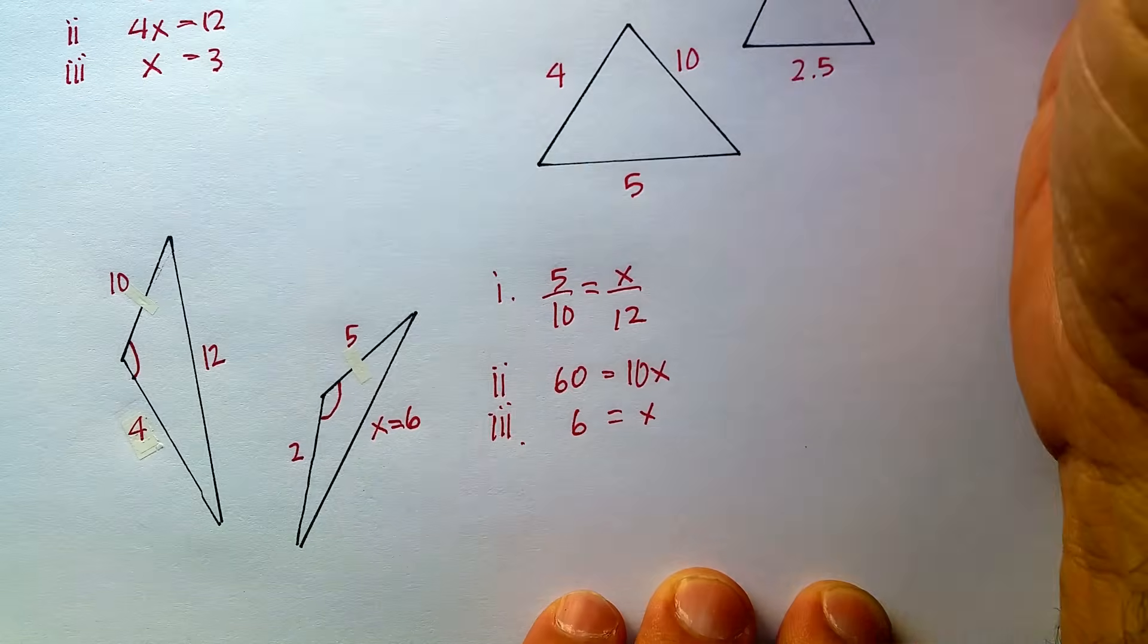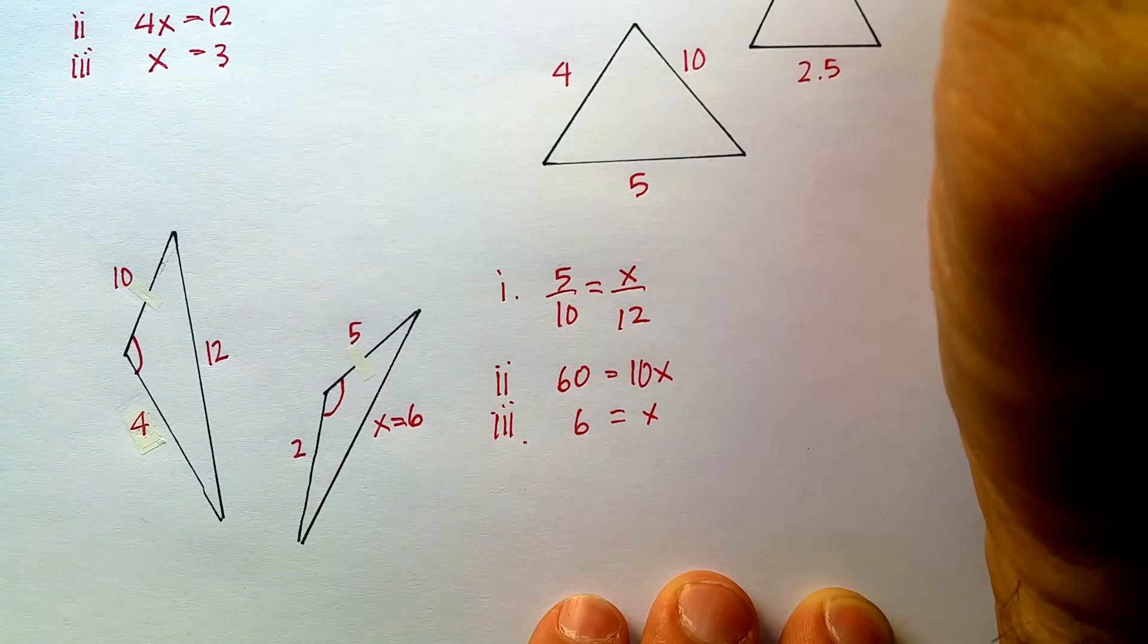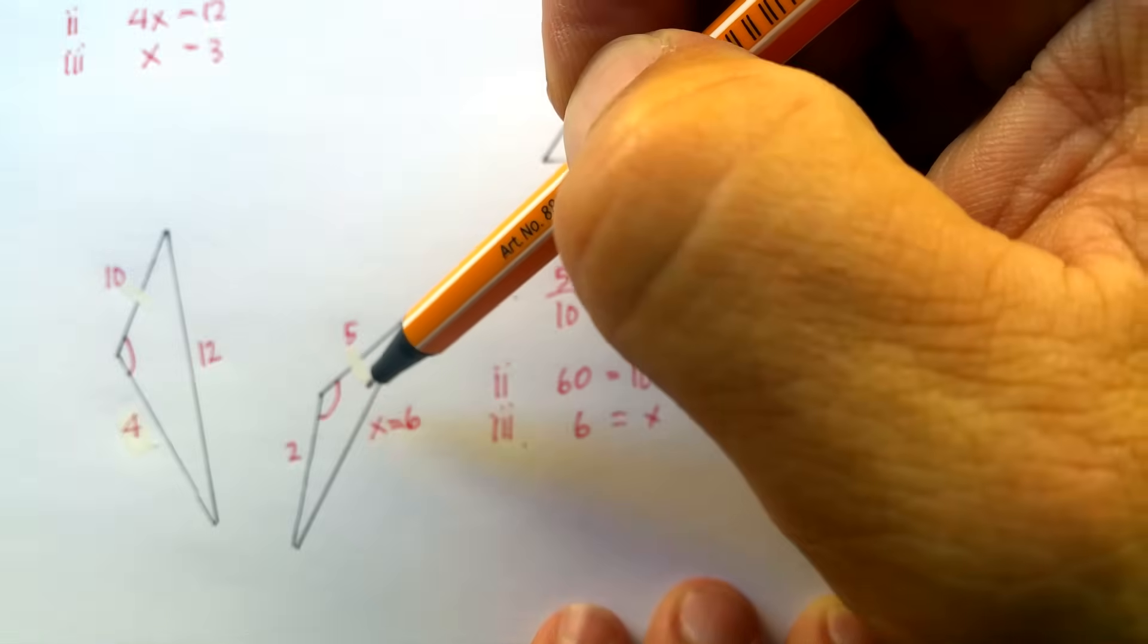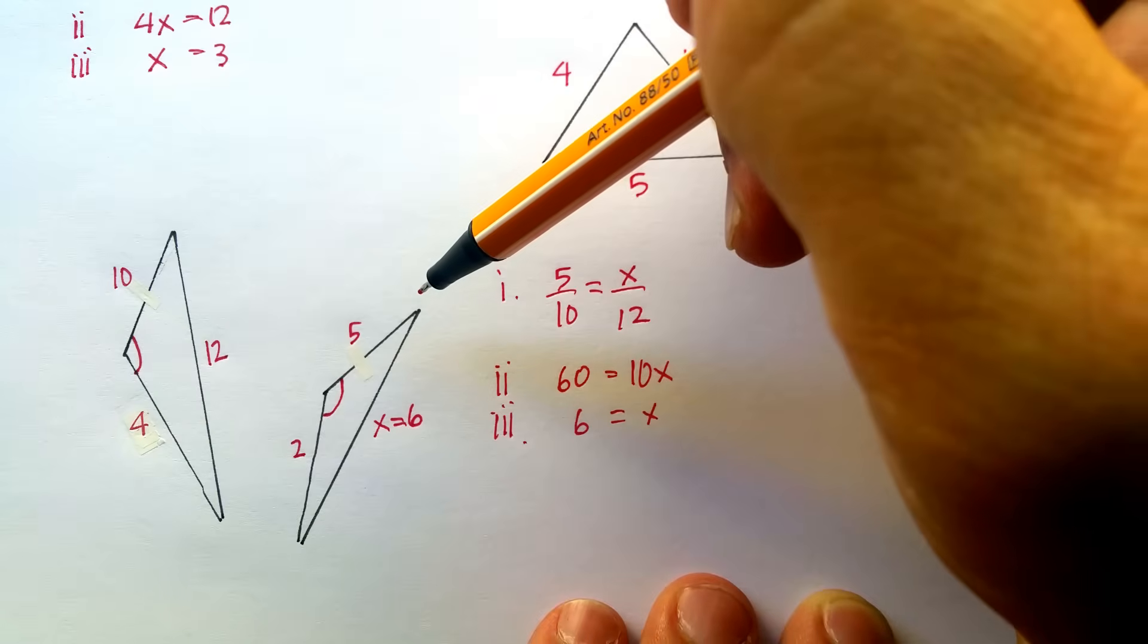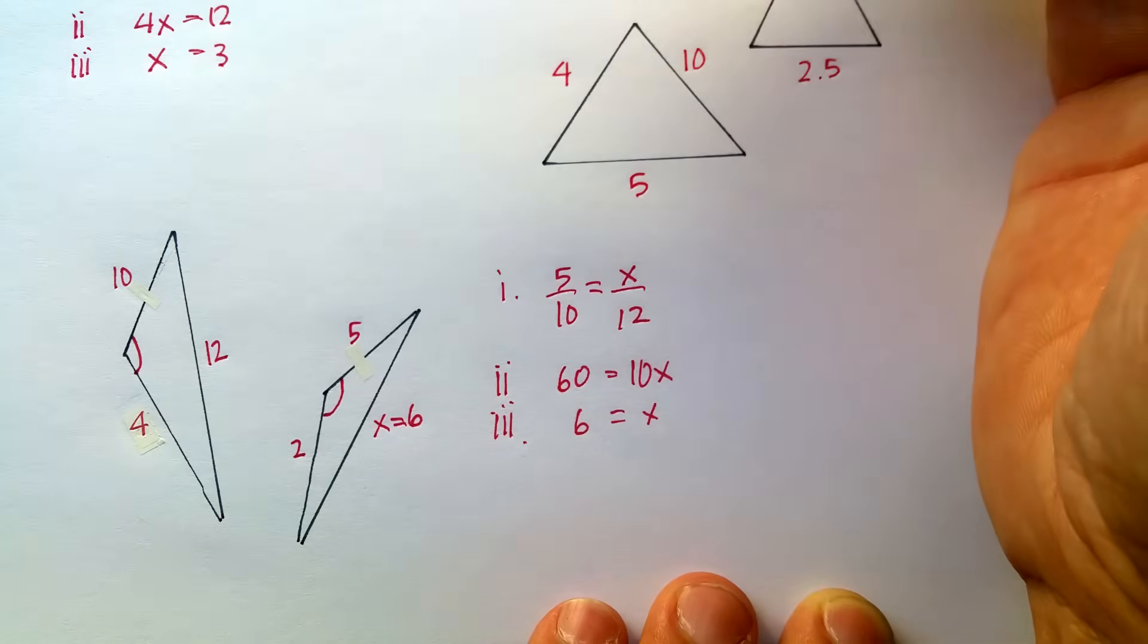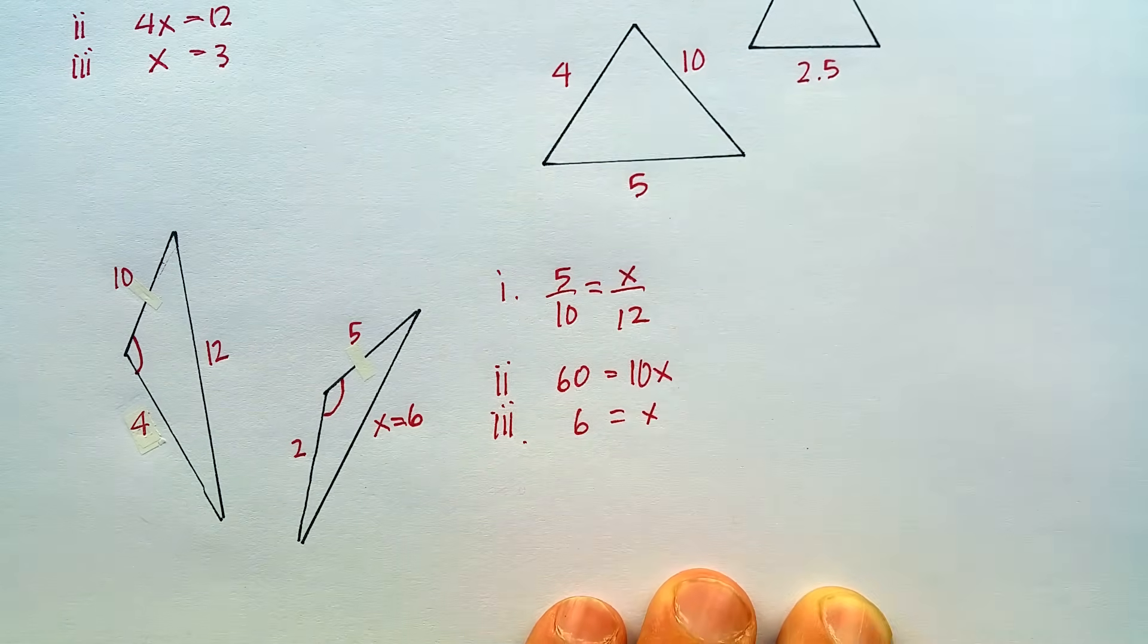So similarity theorems really are helpful when you want to find the missing sides between similar or proportional objects, whether they're triangles or any other polygon for that matter. I hope that was helpful.